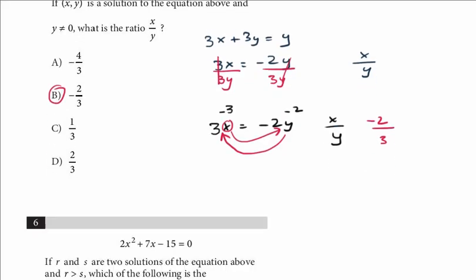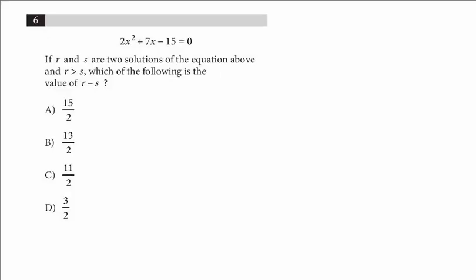And we've got one more advanced math question that's number 6. If r and s are two solutions of the equation above and r is greater than s, which of the following is the value of r minus s? Here, this is a quadratic and we have to factor it. And we have to find the two solutions where r is greater than s.